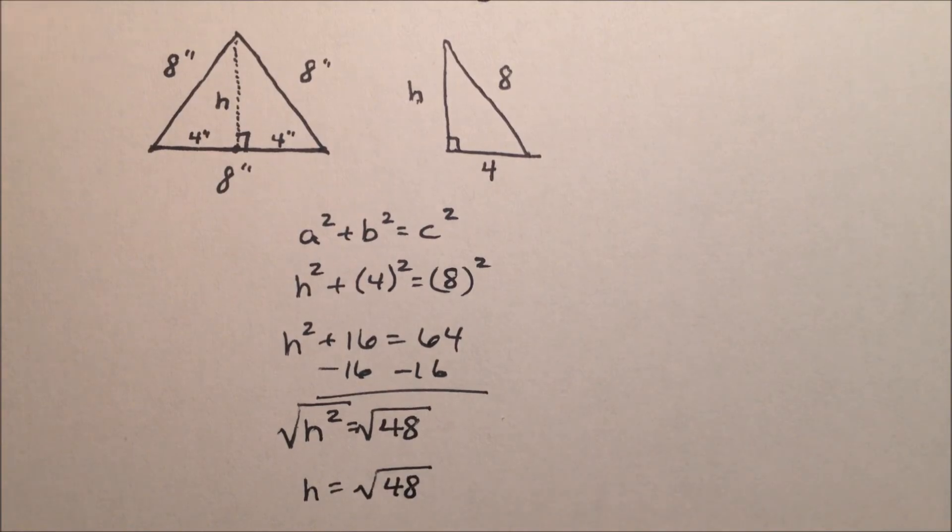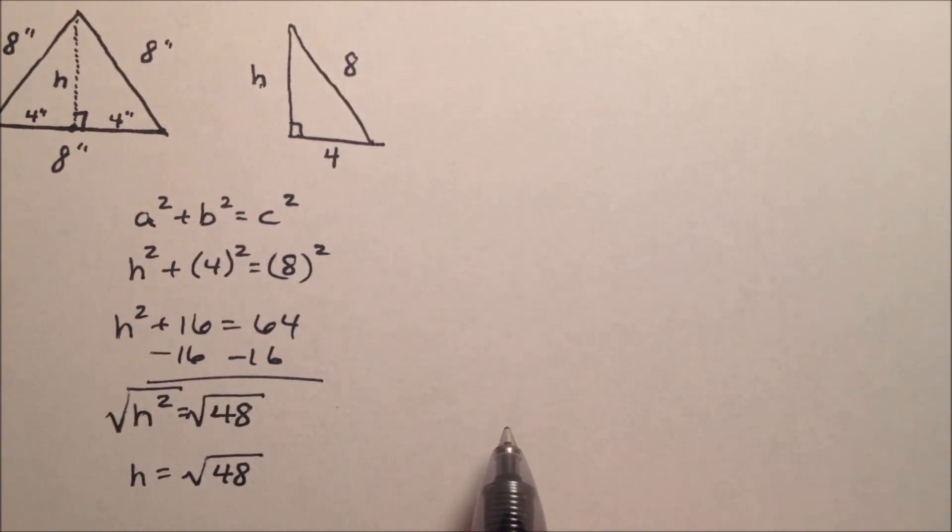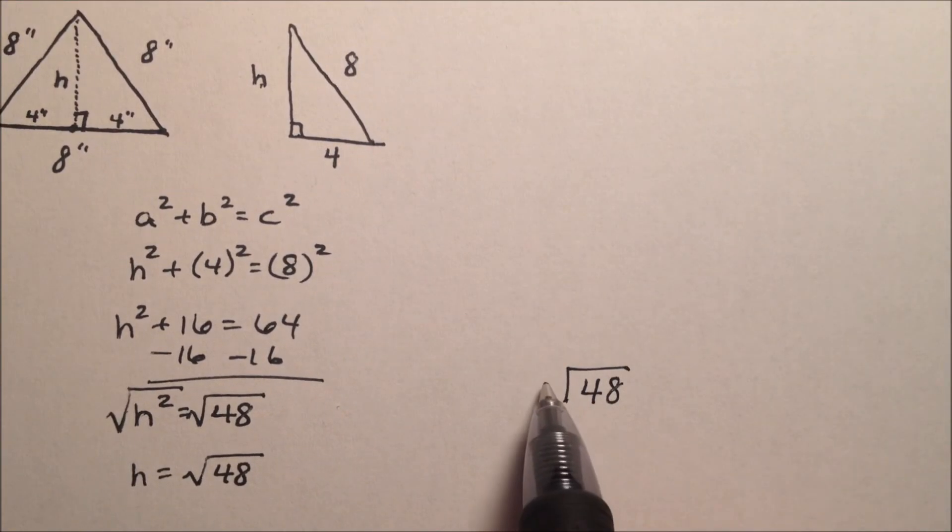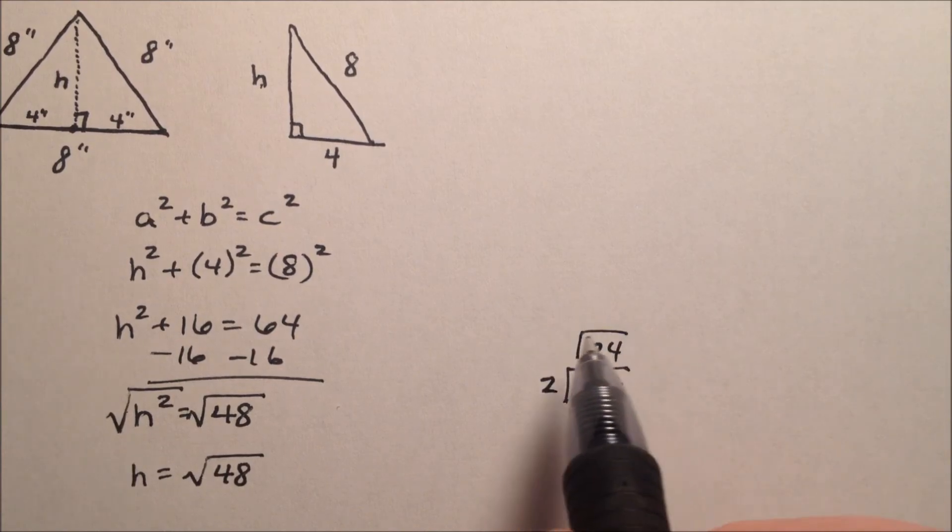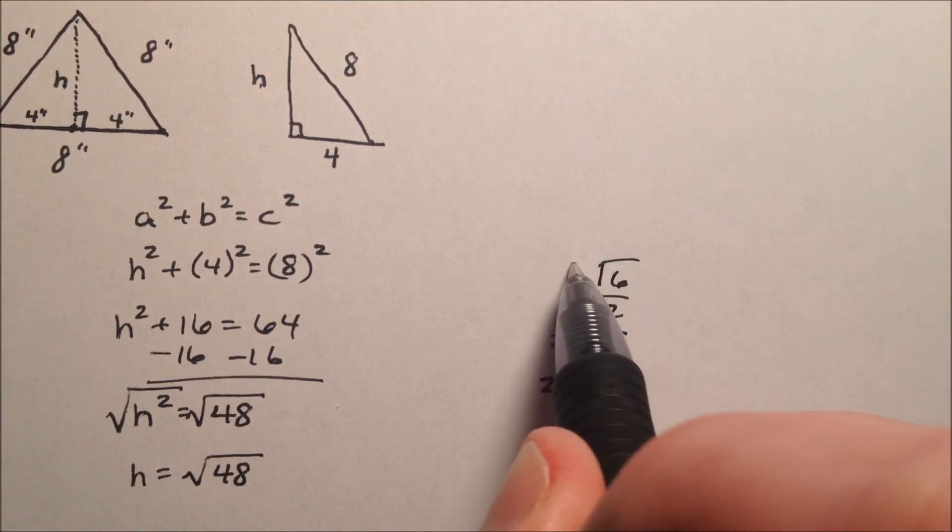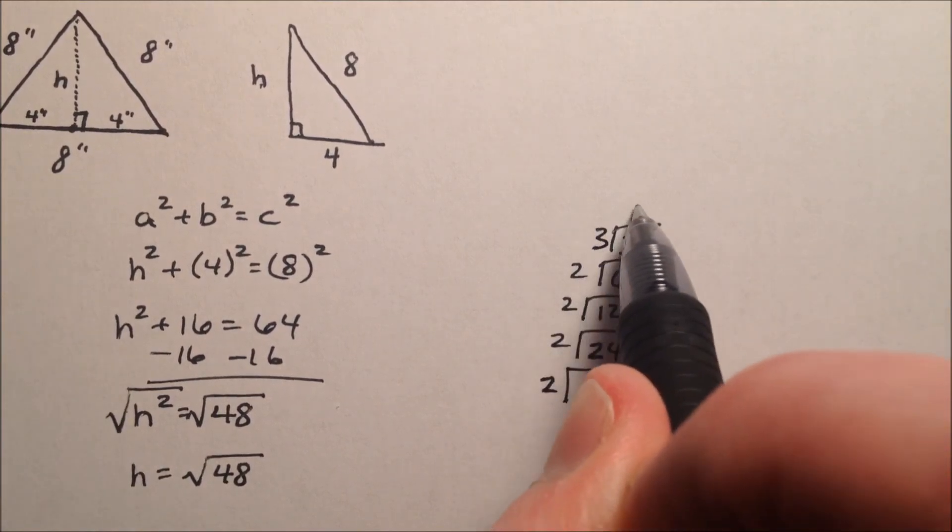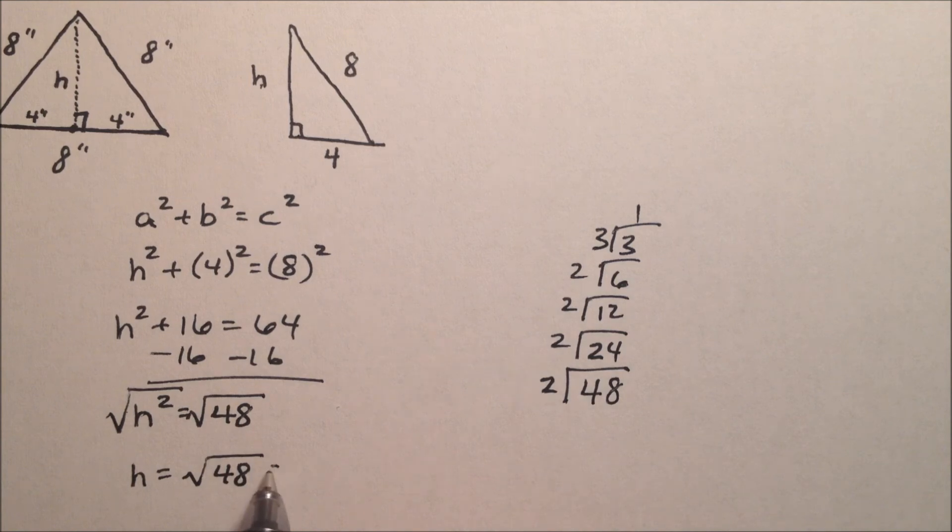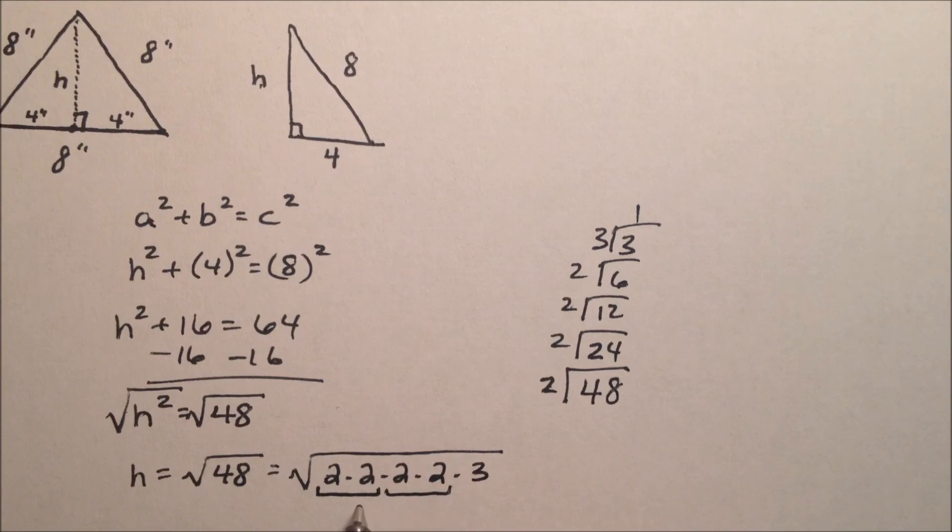But that square root of 48, I bet that'll simplify pretty nice. So let's come over here and do 48 and find the prime factorization. If we cut it in half, we'll get 24. Cut it in half again, we'll get 12. Again for 6. Again for 3. And a 3 makes 1. So the square root of 48 really becomes, 1, 2, 3, 4, four 2's, and then a 3. So to simplify it, we have 2 pairs of 2's. So that pair comes out, and that pair comes out.